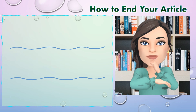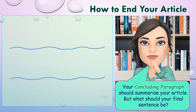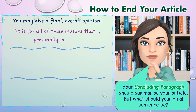Finally, we need to think about ending the article. It's not as simple as 'thank you for taking the time to read, kind regards or many thanks.' We have to be creative in the way we end it, because we want the reader to be satisfied and to carry on thinking about the article long after they finish reading. Your concluding paragraph should summarise your main ideas. You could give a final overall opinion — for example, 'it is for all of these reasons that I personally believe...' By this point, your reader should be convinced by everything you've put forward, and this type of ending is useful in a persuasive argument.